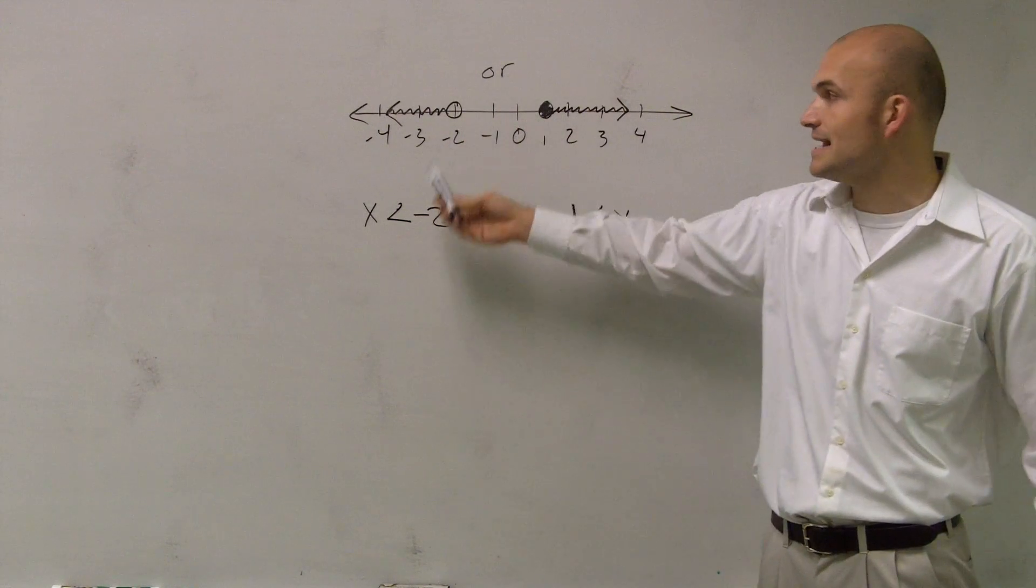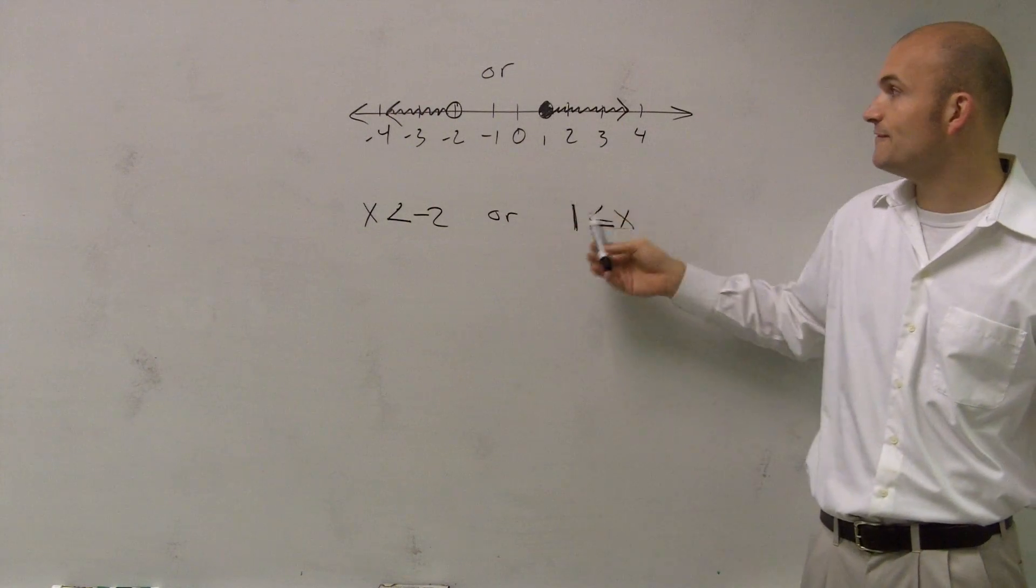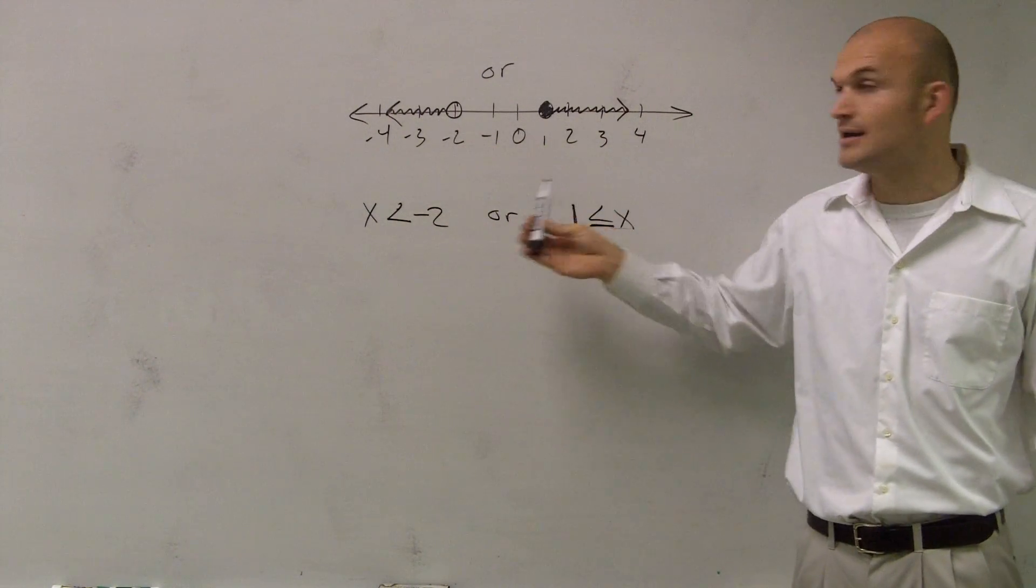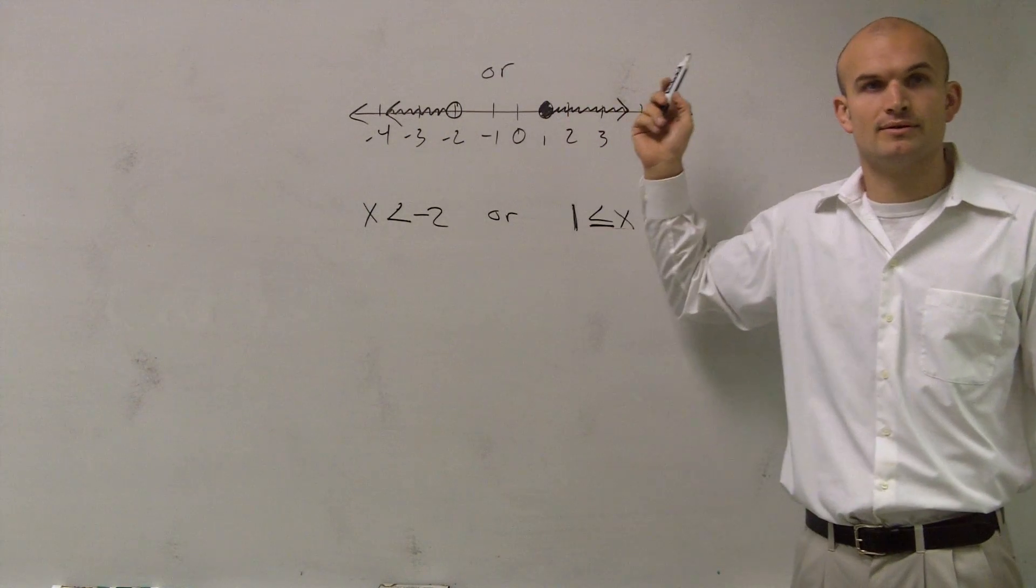And then also just state your two points, determine if it's shaded or not, if it's going to be a closed or an open dot, and then just determine where the arrow is going.